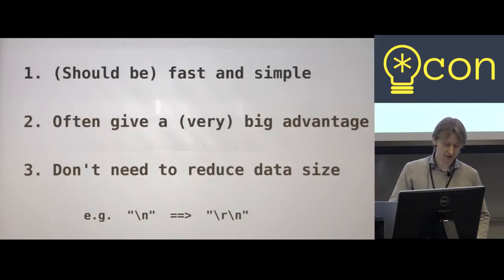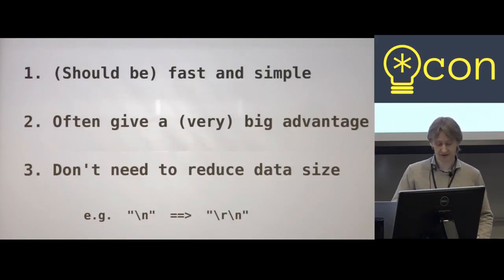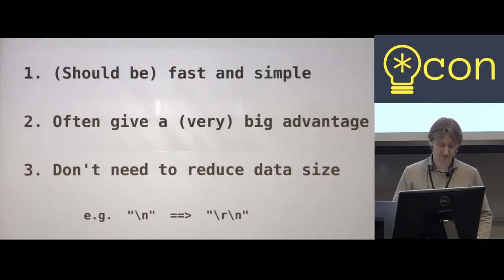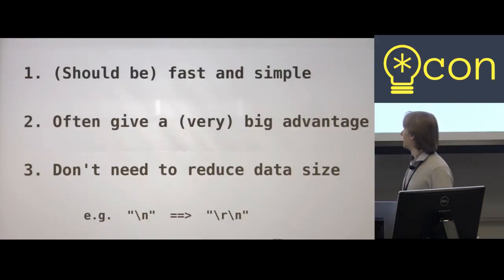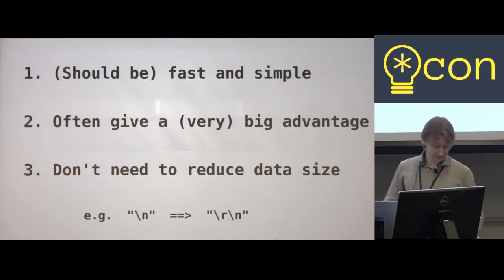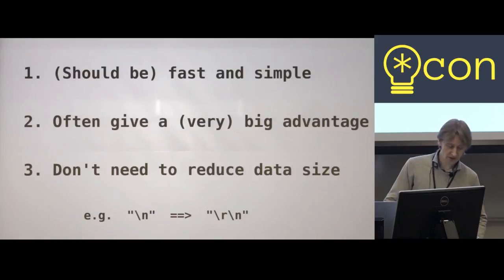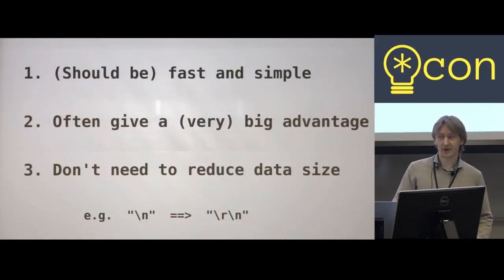For example, switching end-of-line markers in a text or HTML file from Unix-style one byte to Windows-style two bytes increases uncompressed size, but in many cases may reduce compressed size.